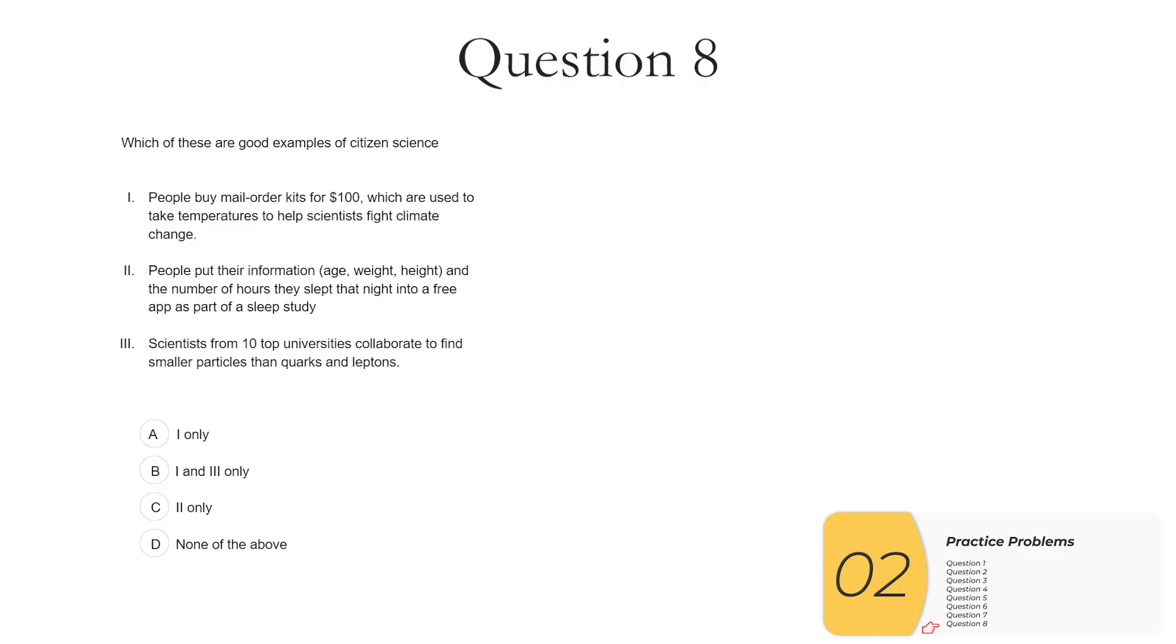Question eight, same question, but different examples. One, people buy mail-order kits for $100, which are used to take temperatures to help scientists fight climate change. So this is not a good example of citizen science because it requires specialized equipment, which costs too much money. With that $100 barrier, you're not going to get people to do your study.